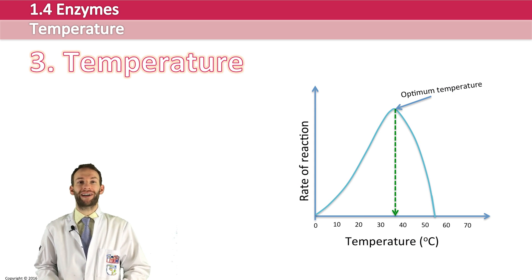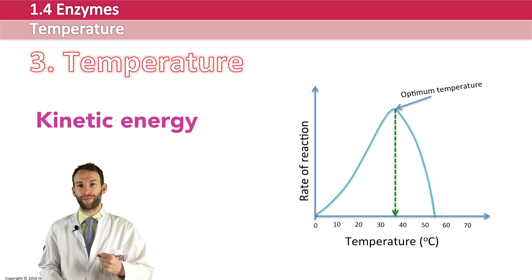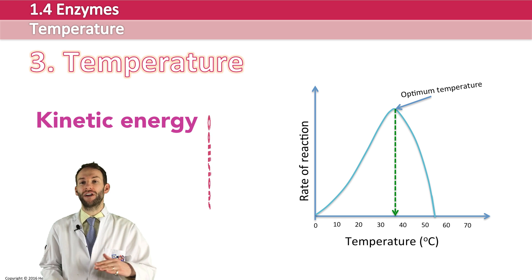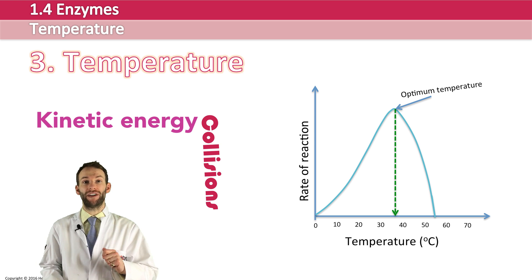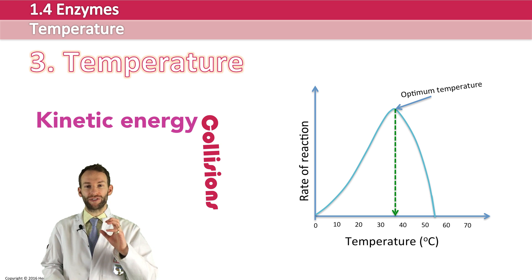Temperature is a little bit different because it's all about kinetic energy. If you heat up a molecule, it will move around more and more — it has more kinetic energy and will move quicker. So if we heat enzymes up, they will start to move around faster and are more likely to have a successful collision with a substrate molecule. As you can see from the graph, an increase in temperature means an increase in the rate of reaction. However, at a certain point, the amount of kinetic energy starts to interfere with the bonds in the molecule — the enzyme's tertiary and quaternary structure starts to break down.